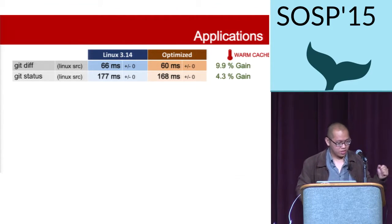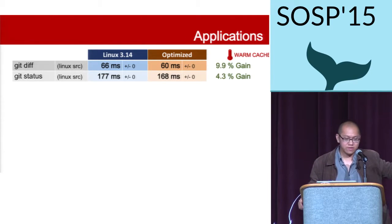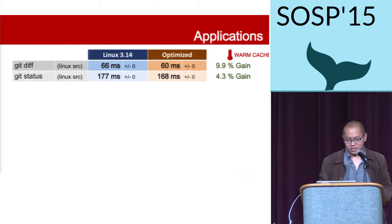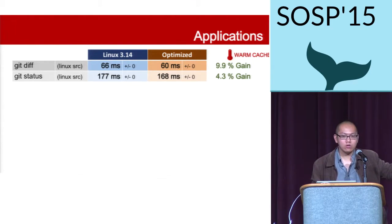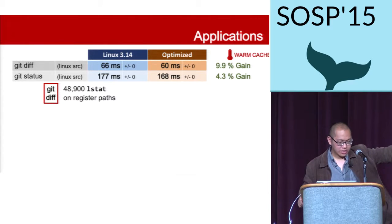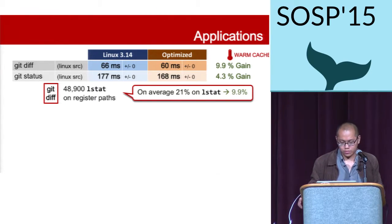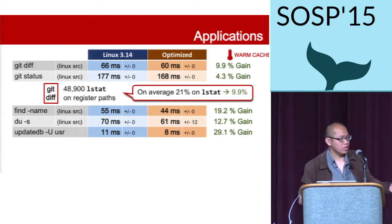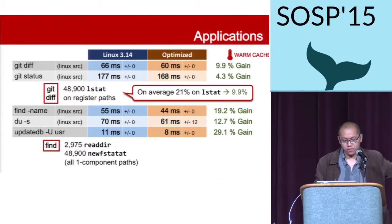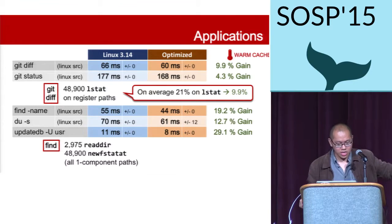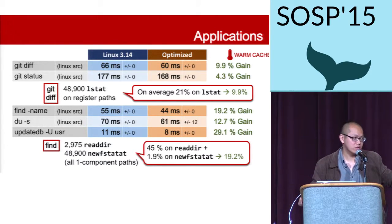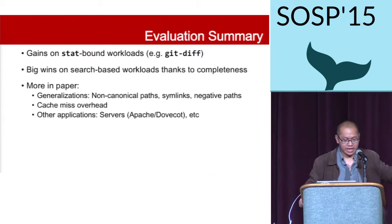For application performance: git diff — one of my favorite applications — is bound by stat system calls on a Linux source repository, performing 50,000 stat calls, and gets up to 10% improvement. Other workloads like find and du are search-based, performing around 3,000 readdir operations and stat on single-component paths, and get up to 20% improvement — more significant. Overall, we see gains on stat-bound workloads but bigger wins on search-based workloads. There are more results in the paper.